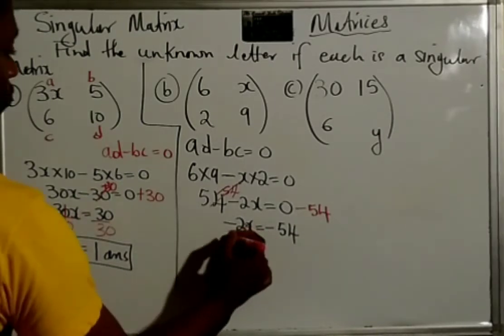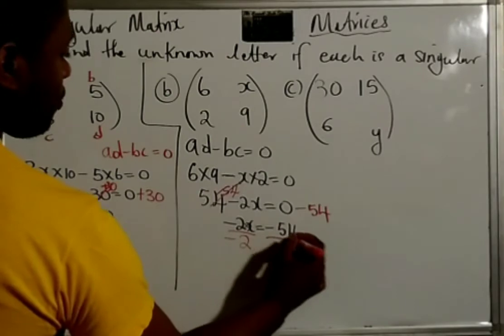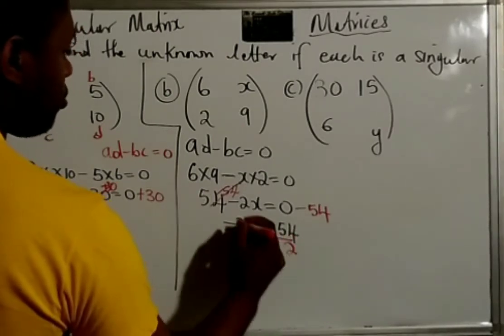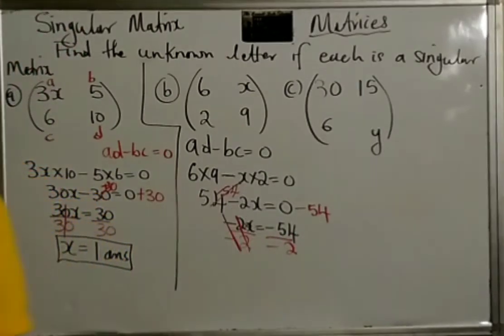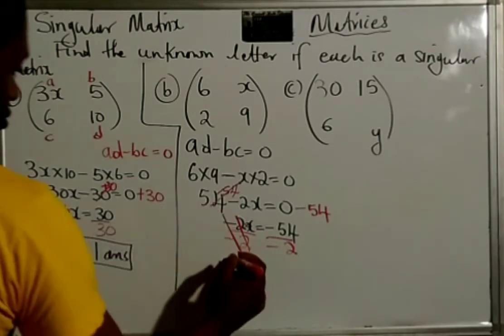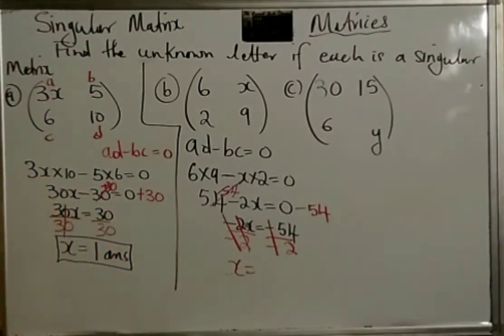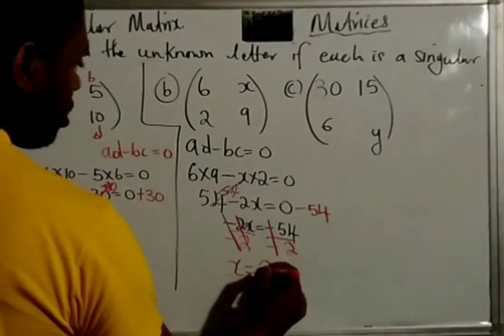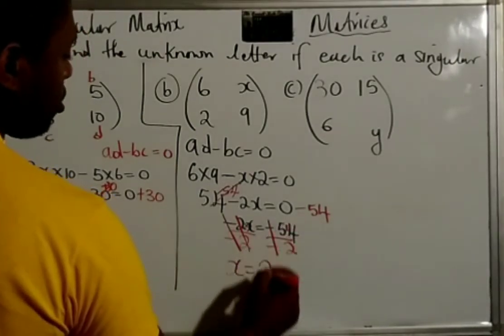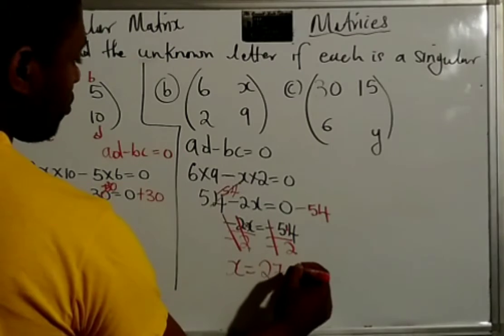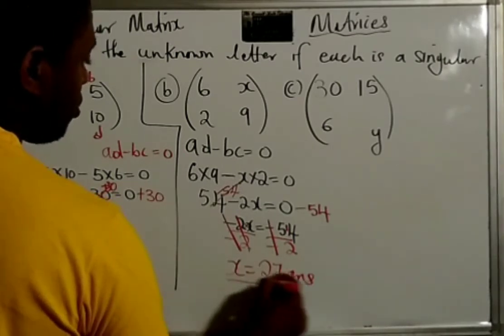So, we do the inverse, which is to divide by negative 2. Now, we do to one side, we do to both sides. So, there we have it, we have X by itself. So, X is equal to, the negatives cancel, 2 into 54 goes 27. So, X is equal to 27.